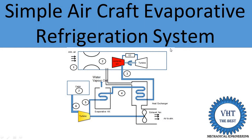The simple aircraft evaporative refrigeration system is a modification of the simple aircraft refrigeration system — just one word added: evaporative. In the simple aircraft evaporative refrigeration system, there are 5 components: compressor, heat exchanger, evaporative heat exchanger, exhaust fan, and the cabin.